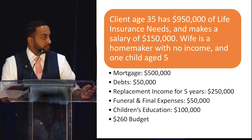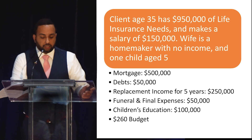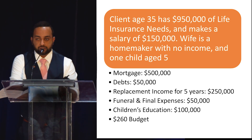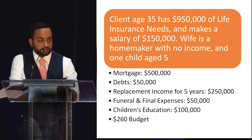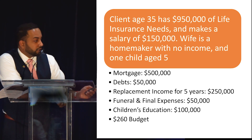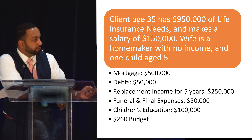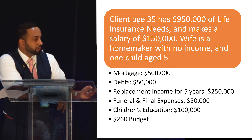Let's look at a case study. A client age 35 has $950,000 of life insurance, makes a salary of $150,000, wife is a homemaker with no income, and one child age five. Their needs include covering the mortgage, covering debts, providing replacement income for five years, funeral and final expenses, and children's education. They mentioned they want to stay around a $260 budget.